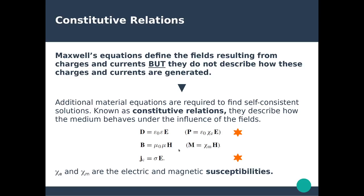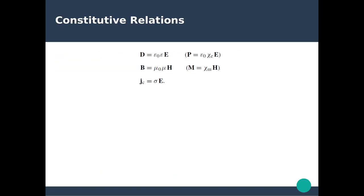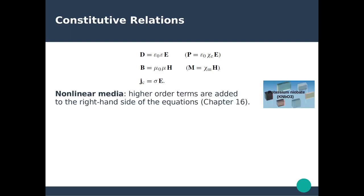To wrap up this first video, let's discuss how constitutive relations are adapted for different types of materials. For non-linear media, additional terms can be added — for instance, the electric displacement can include terms proportional to E-squared or E-cubed. This will be discussed extensively in the chapter on non-linear optics and plasmonics. For anisotropic media, where properties depend on the orientation of the fields, instead of a scalar permittivity epsilon, we use a tensor that describes how the material responds to fields in different directions relative to the atomic lattice.